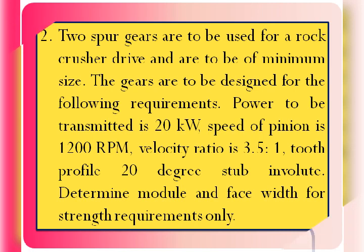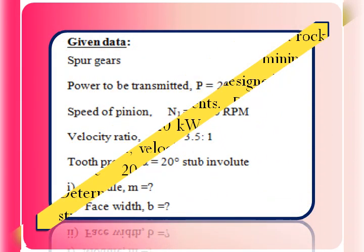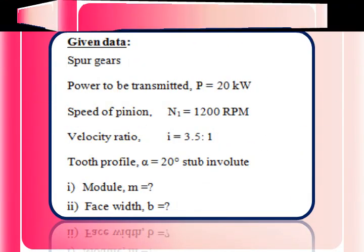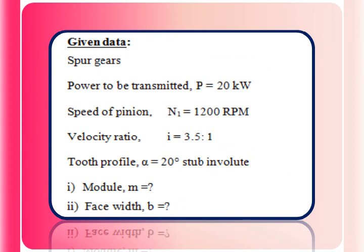Now we will list out the given data from the given problem. Two spur gears — this problem belongs to spur gears to be used for a rock crusher drive and are to be of minimum size. Minimum size means we are supposed to go with the least number of teeth. Power to be transmitted P is equal to 20 kilowatt or 20 × 10³ watts. Speed of the pinion is 1200 rpm. Here the element given is pinion, which is the first element, so we use suffix 1. N₁, the speed of pinion, is equal to 1200 rpm.